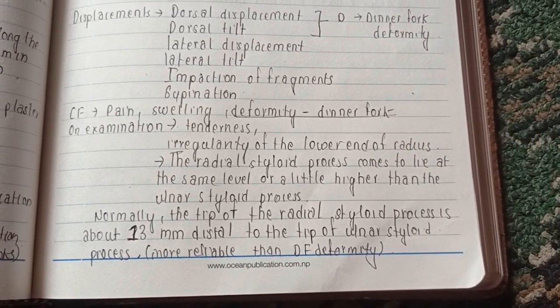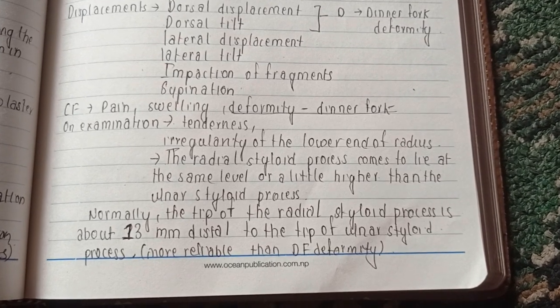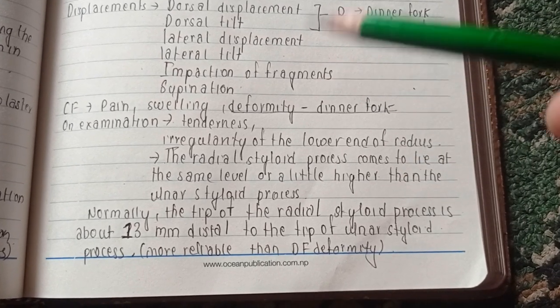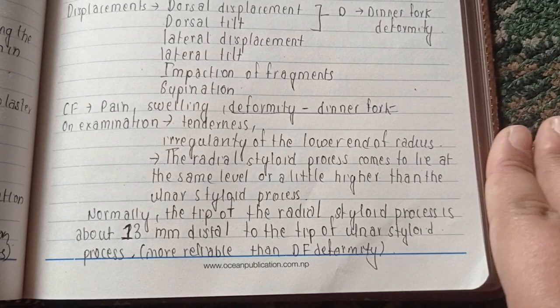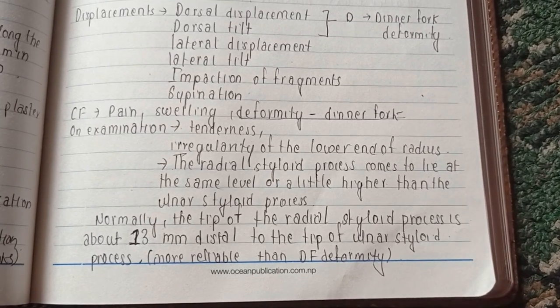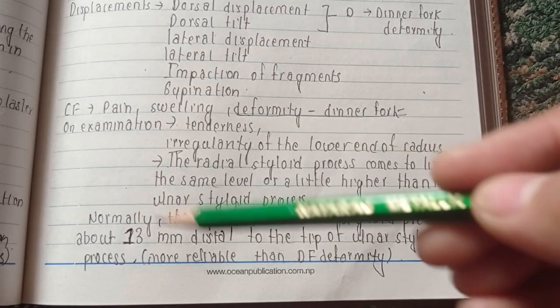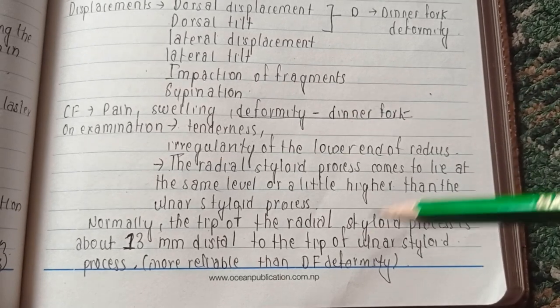Normally the tip of the radial styloid process is about 13 millimeters distal to the tip of the ulnar styloid process. But in this fracture, the radial styloid comes to lie at the same level. If this is seen on x-ray, it is definitely a Colles' fracture.